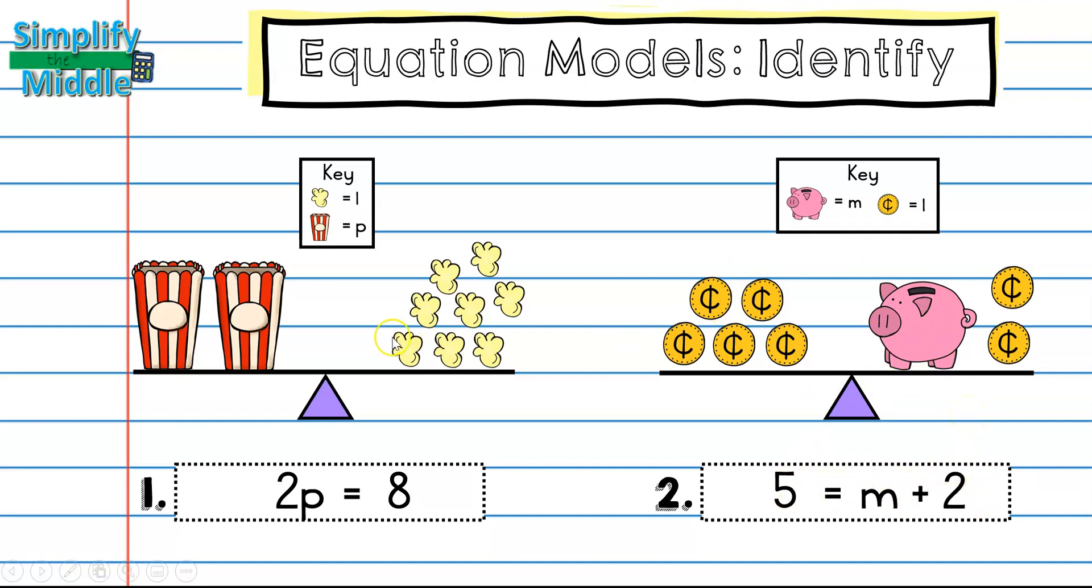Notice that in this problem, the popcorn containers were on the left side of the scale, so my variable was written on the left. On this scale, the piggy bank was on the right side of the scale, so I wrote my variable on the right. Make sure that your equation matches your picture.